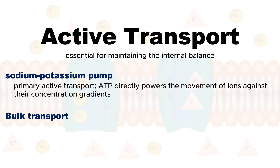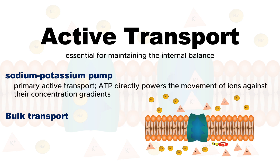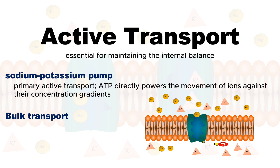The sodium-potassium pump is a form of primary active transport, where ATP directly powers the movement of ions against their concentration gradients, keeping the cell's ion balance in check. This is crucial for electrical signaling in neurons and muscle contractions.